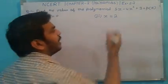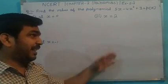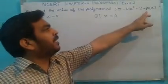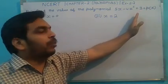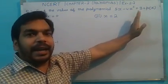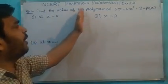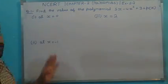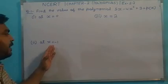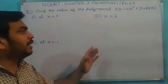Why is it called p(x)? P means polynomial, and x means in terms of x. A polynomial whose variable is x, we denote as p(x). You have to find out the value of this polynomial at three points: (i) at x = 0, (ii) at x = -1, and (iii) at x = 2.